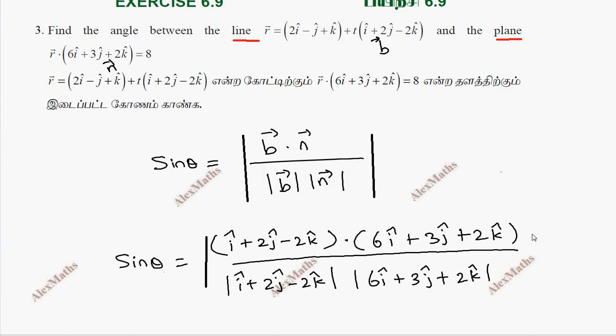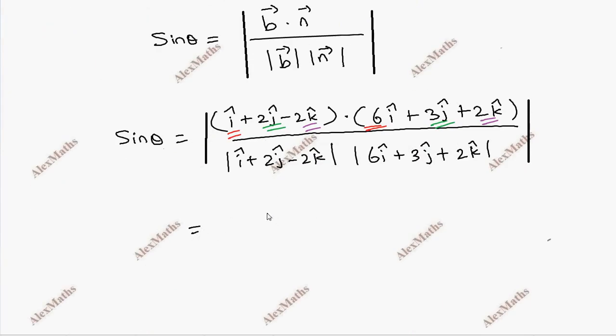The numerator will be dot product, corresponding i component and i component multiply, j component and j component multiply. So the numerator equal to 6 plus 6 minus 4, divided by root of magnitude square 1 plus 4 plus 4. The magnitude square is 36 plus 9 plus 4.